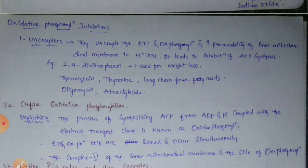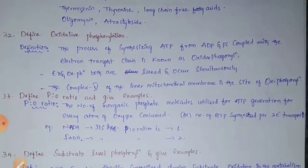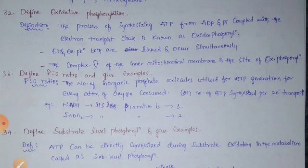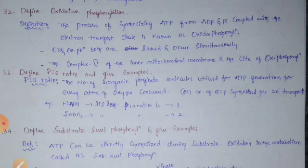Define oxidative phosphorylation. The process of synthesizing ATP from ADP and inorganic phosphate (Pi), coupled with the electron transport chain, is known as oxidative phosphorylation. The electron transport chain and oxidative phosphorylation are linked and occur simultaneously. Complex 5 of the inner mitochondrial membrane is the site of oxidative phosphorylation.